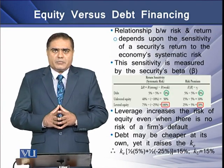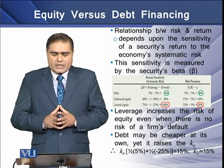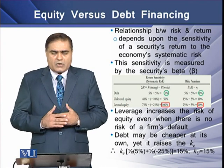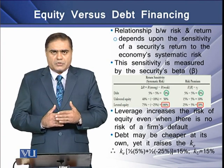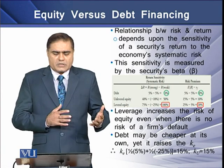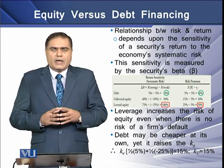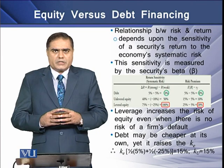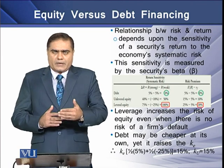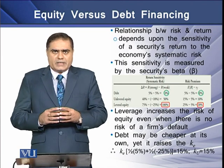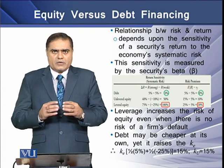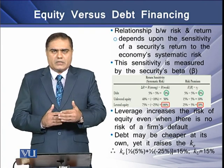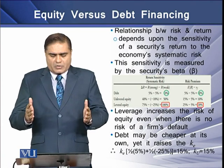The relationship between risk and return depends upon the sensitivity of a security's return to the economy's systematic risk, and this systematic risk is measured in terms of beta. Beta represents the riskiness of the firm's returns to the macroeconomic factors in the market economy.